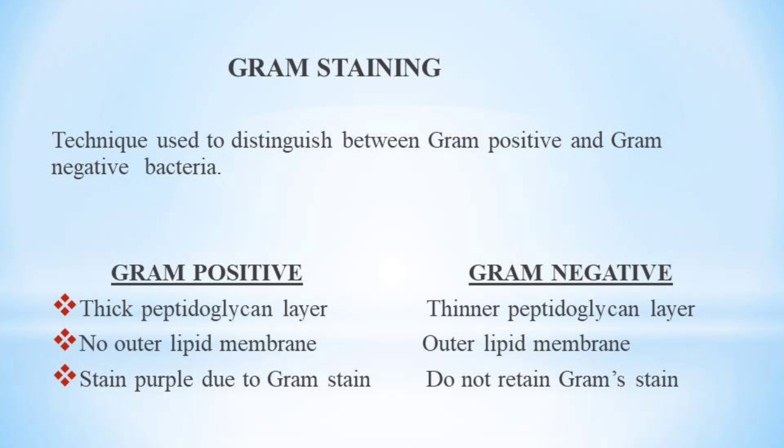The differences between gram-positive and gram-negative bacteria are as follows: gram-positive bacteria possess a thick peptidoglycan layer, while gram-negative bacteria possess a thinner peptidoglycan layer. Gram-negative bacteria also possess an extra outer lipid membrane outside the peptidoglycan layer, which is absent in gram-positive bacteria. Gram-positive bacteria stain purple with Gram stain, while gram-negative bacteria do not retain the Gram stain.